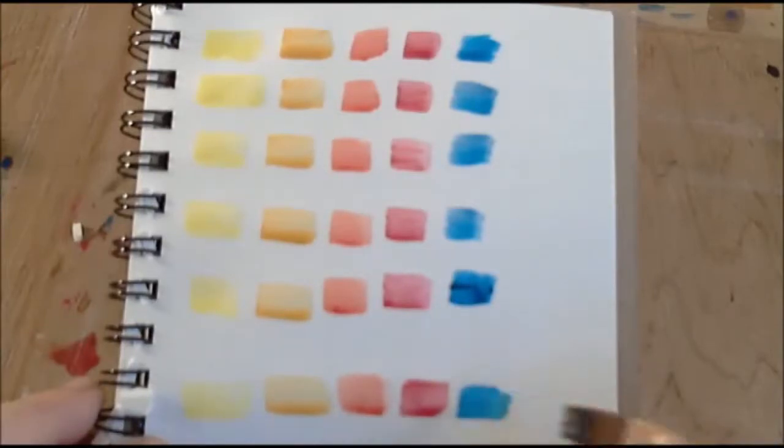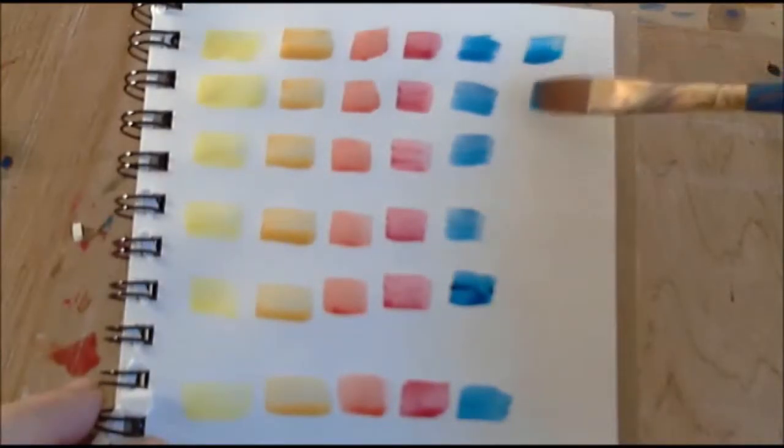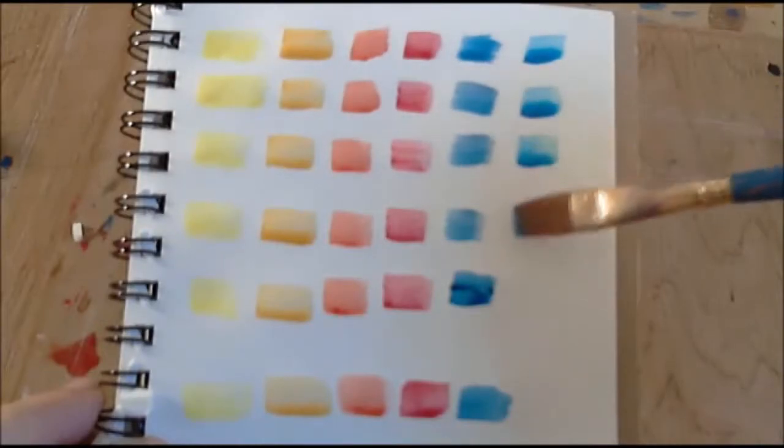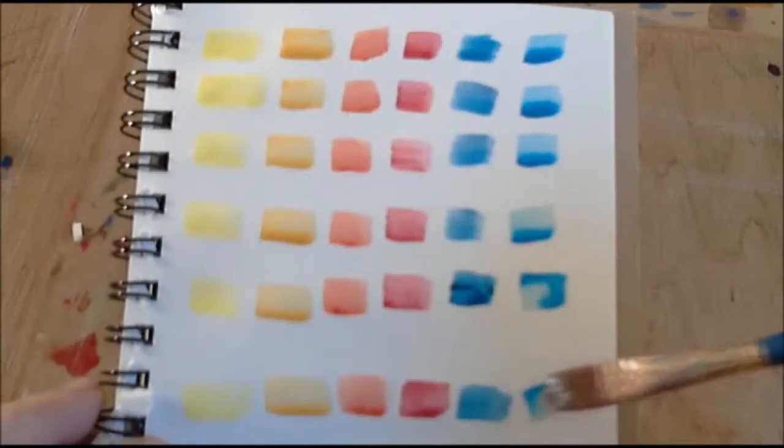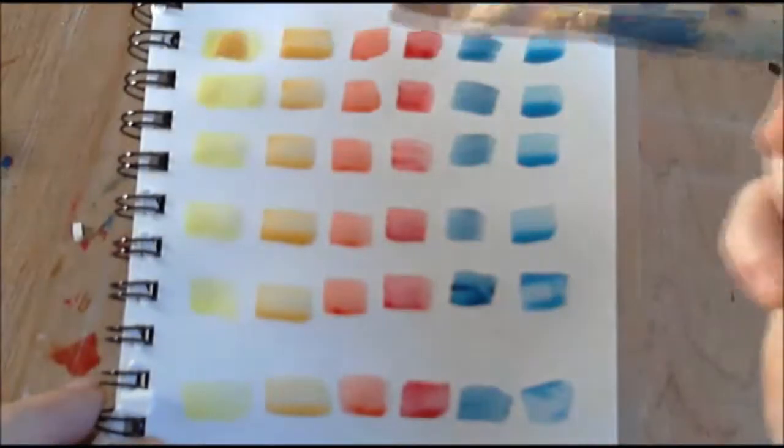Once all the columns have been established, the colours can be combined. I will begin by painting the warm yellow, yellow ochre, on top of the other colours to create greens and oranges.